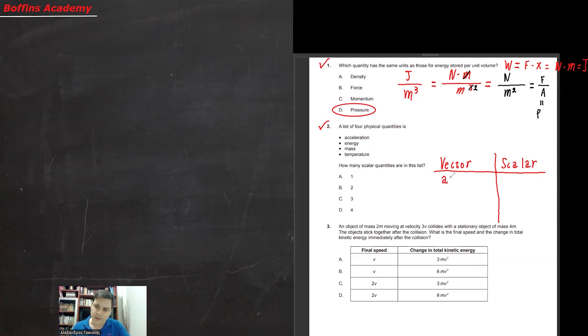As we know, acceleration is a vector quantity. Acceleration is a vector quantity. Scalar quantity is energy because we don't need it to include any direction. We don't have any direction.